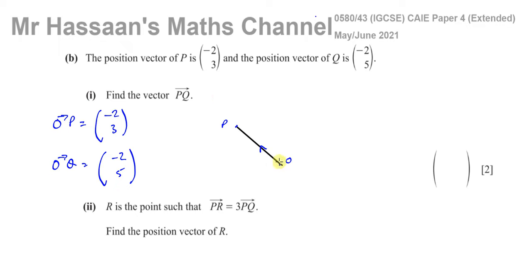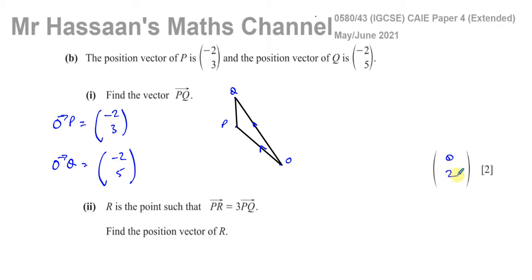We want to find the vector from P to Q, and we can see it's just going straight up. They're both 2 units away on the left from the origin, but one is higher up. So basically to get from P to Q you go (0, 2). That's the visual way of doing it.